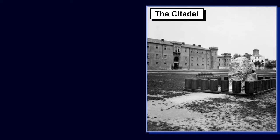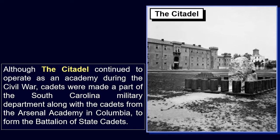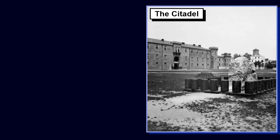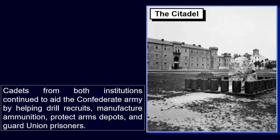Although the Citadel continued to operate as an academy during the Civil War, Cadets were made a part of the South Carolina Military Department, along with Cadets from the Arsenal Academy in Columbia, to form a battalion of State Cadets. Cadets from both institutions continued to aid the Confederate Army by helping drill recruits, manufacture ammunition, protect arms depots, and guard Union prisoners.